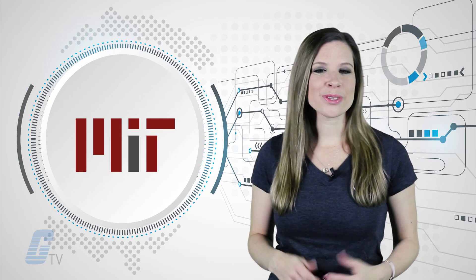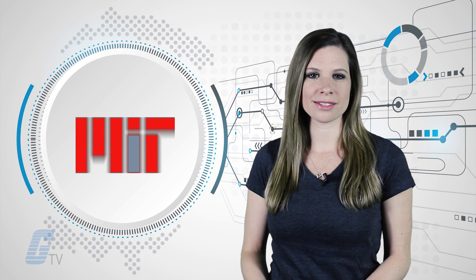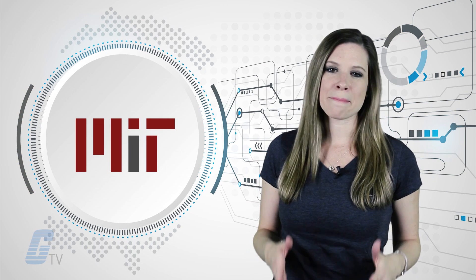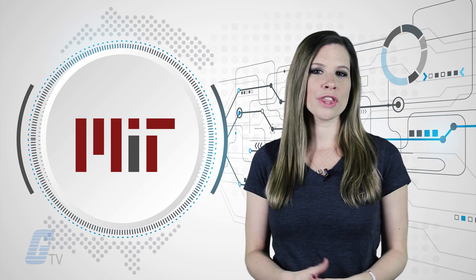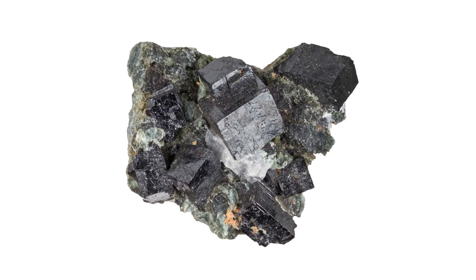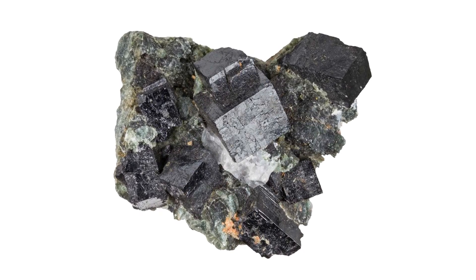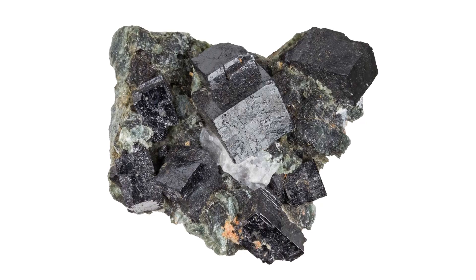MIT researchers are using intense light to improve solar cell materials. MIT has taken a major step towards improving the performance of the mineral perovskite. Perovskite is one of the many materials being considered for future electronic applications due to its promising electronic and optical properties.